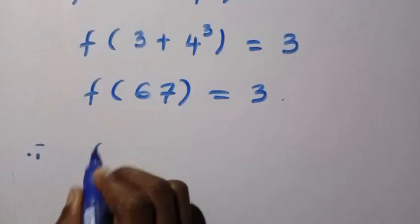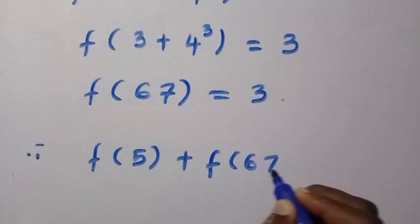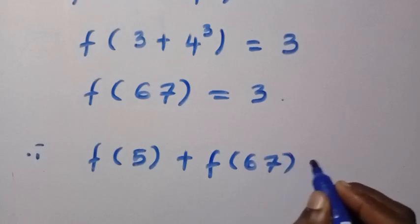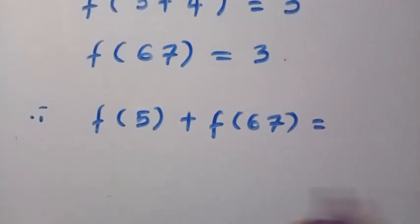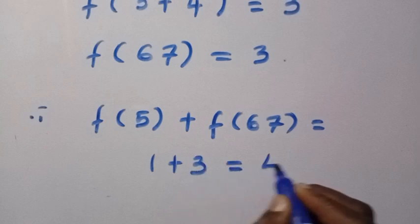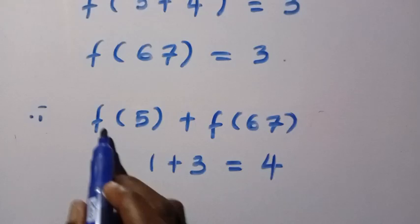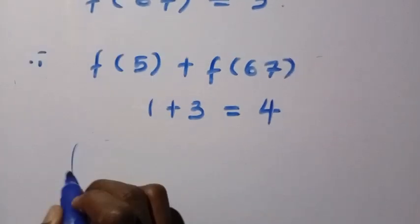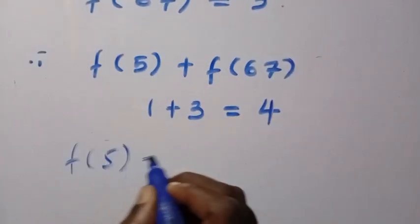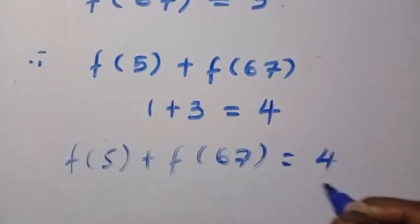Therefore, f(5) + f(67) gives us 1 + 3, and 1 + 3 equals 4. So for proper writing, we have f(5) + f(67) = 4.